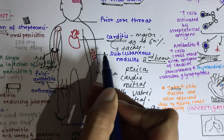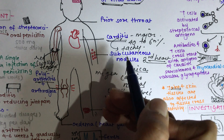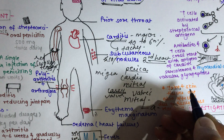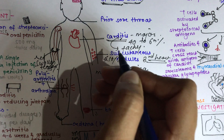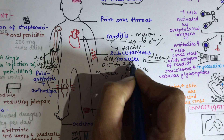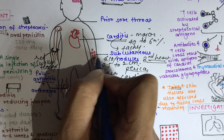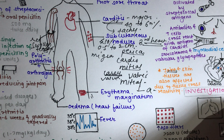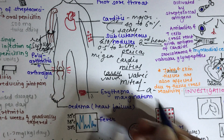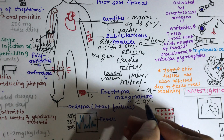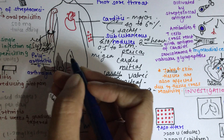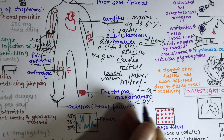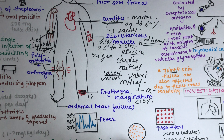The fourth major criteria is subcutaneous nodules — a rare manifestation occurring in less than 10% of patients. These are painless firm nodules ranging 0.5 to 2 centimeters, found on the extensor surface of joints. The fifth major criteria is erythema marginatum, also rare, occurring in less than 10% of patients. These are red macules with a pale center seen over the trunk and proximal extremities.